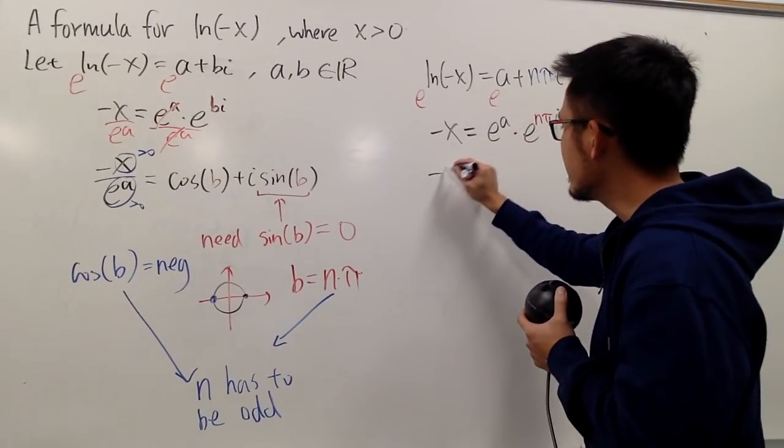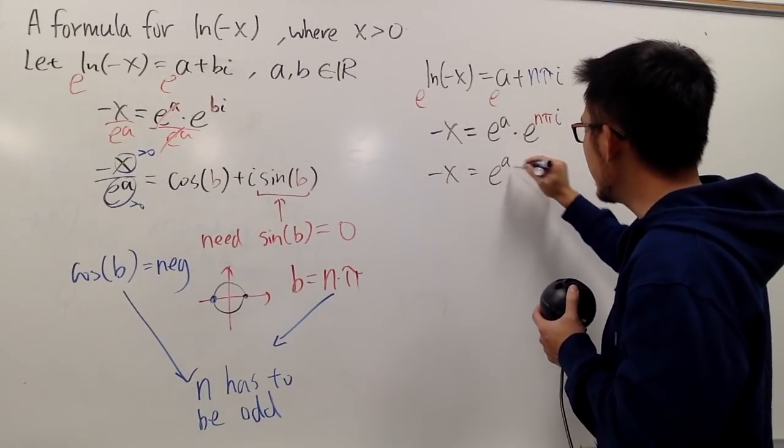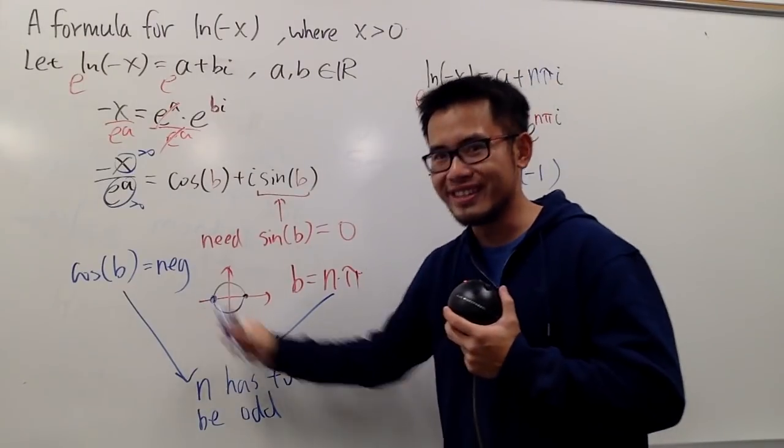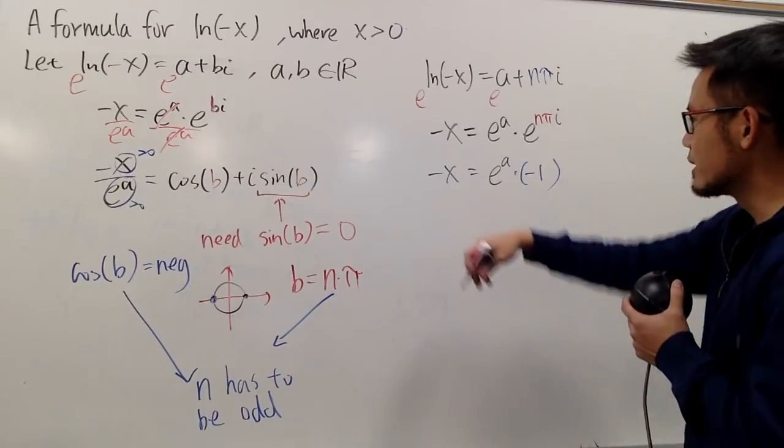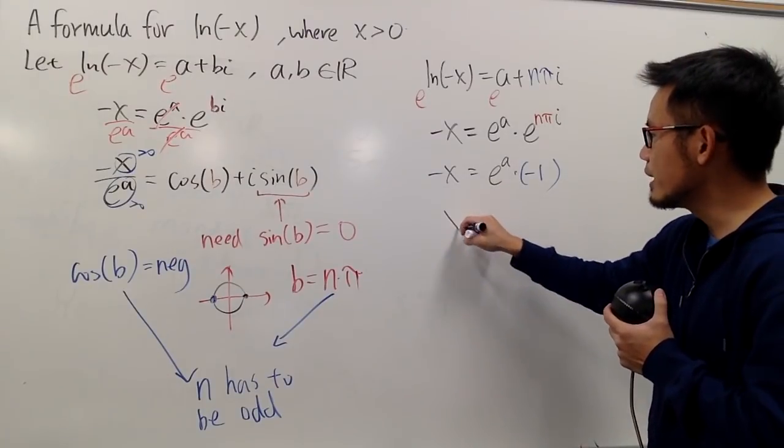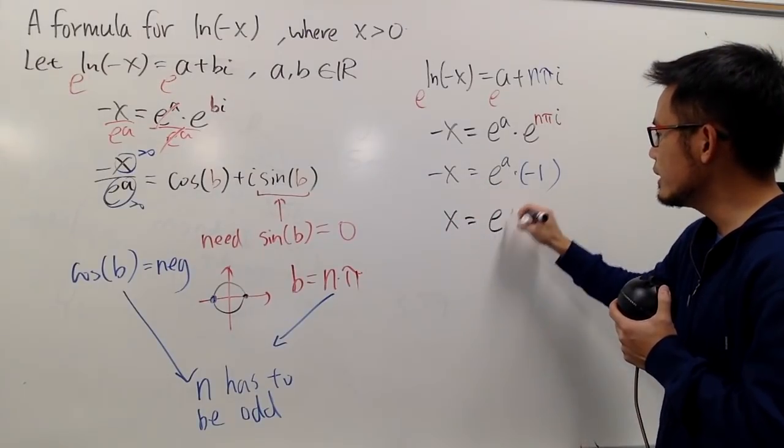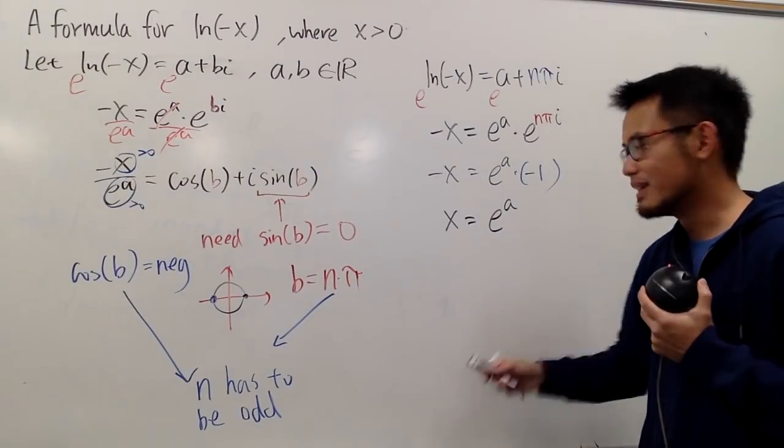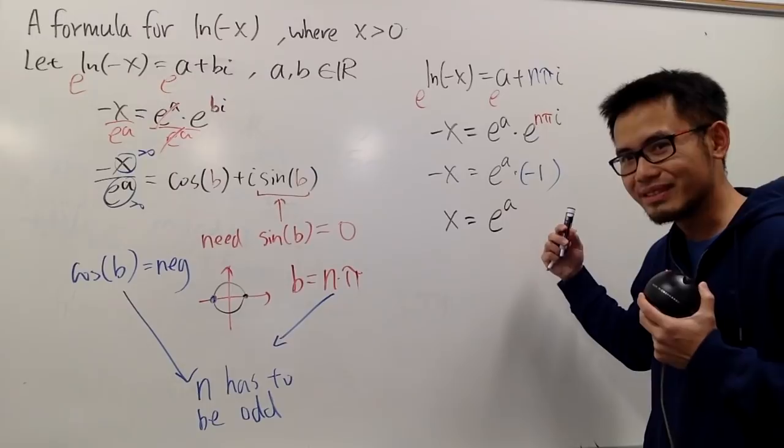So, this is the same as, negative x equal to e to the a times, this is the negative 1 from this picture here. It's just the cosine value. And of course, we can divide by negative 1 on both sides. Namely, we get x is equal to e to the a. And look at, x is real, and it's positive, and a is also real, and it's also positive.